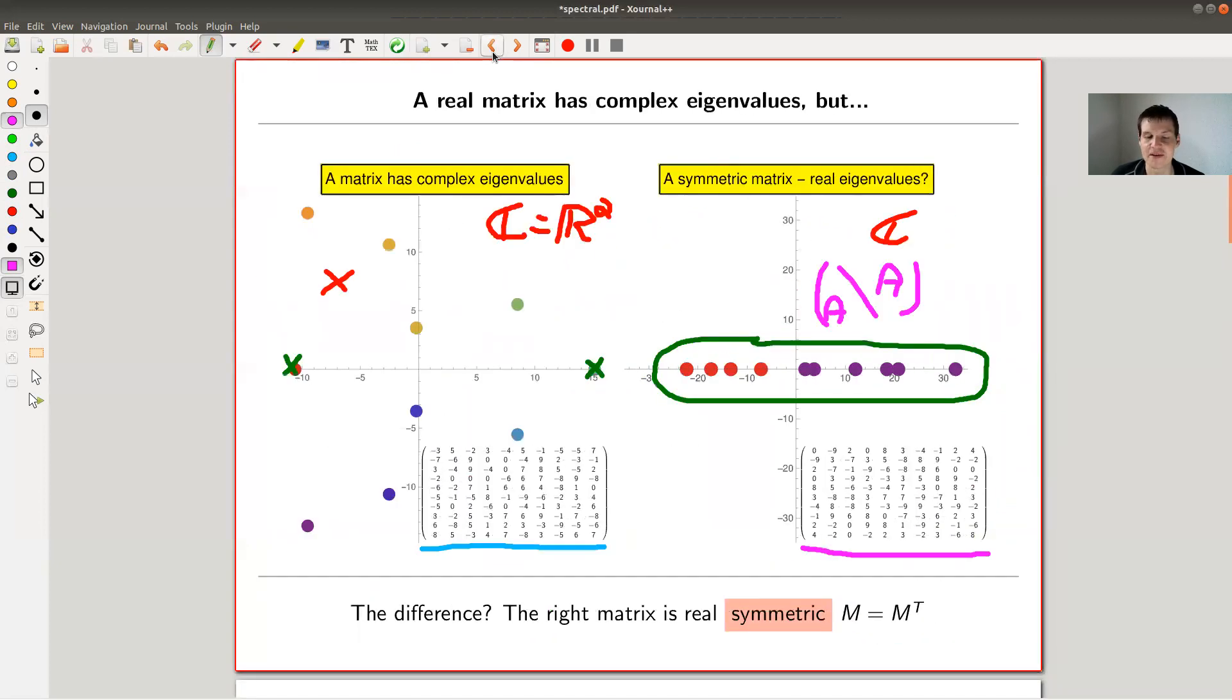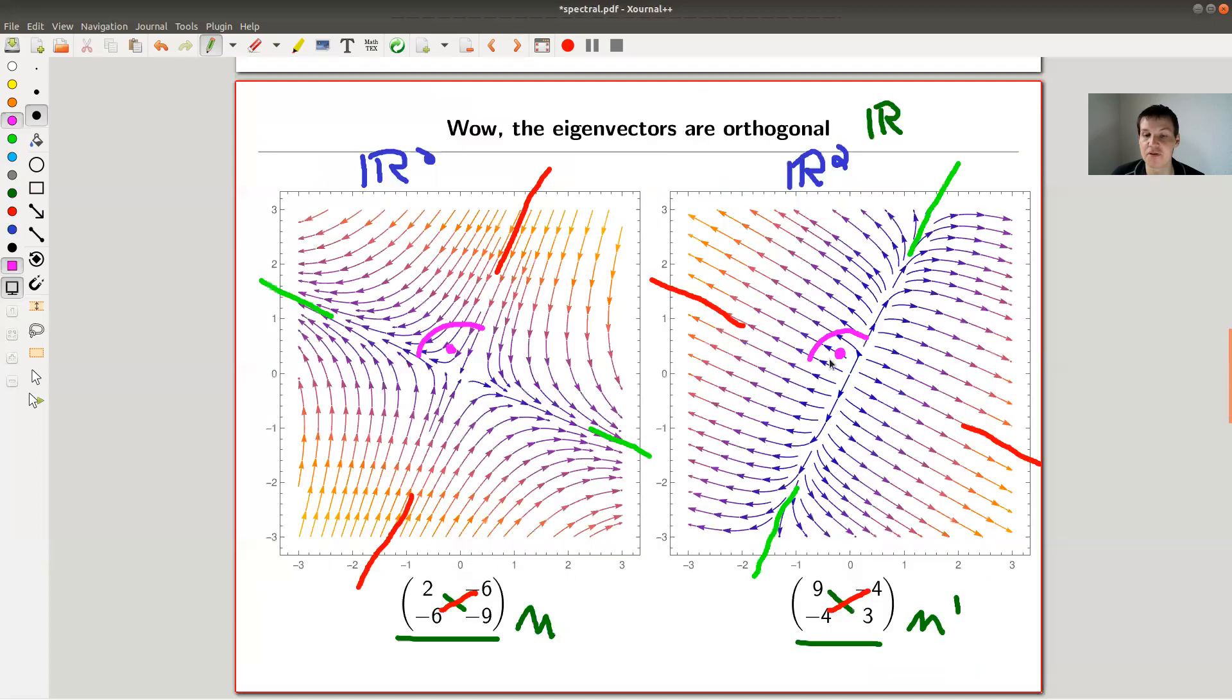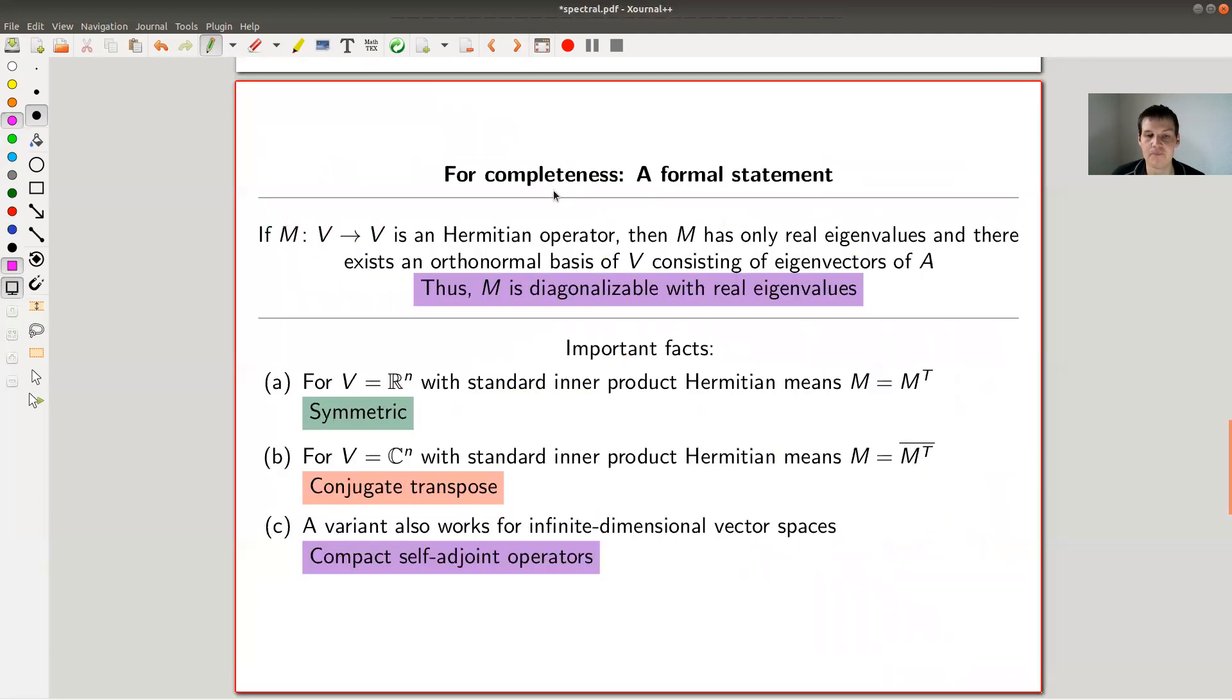So what have you seen? Okay, we have seen, let's ignore the complex case for the moment. It's similar, but you need to take the complex conjugate. So if you have a real matrix which is symmetric, you get real eigenvalues and apparently you also get orthogonal eigenvectors. And that's exactly what the theorem says, the spectral theorem. So if you have a hermitian operator, which is just symmetric in the case you have R to the n, don't worry too much about the terminology. It's conjugate transpose, you get transpose in case you are C to the n.